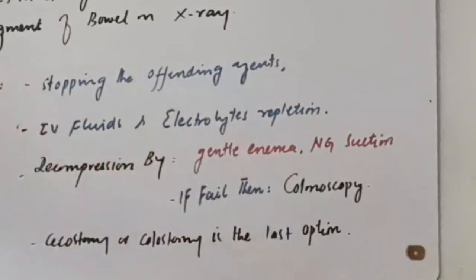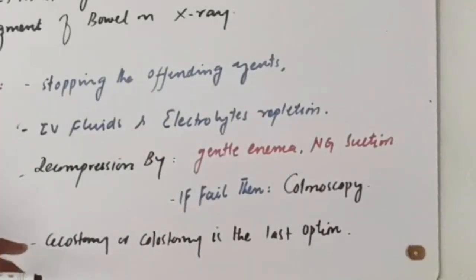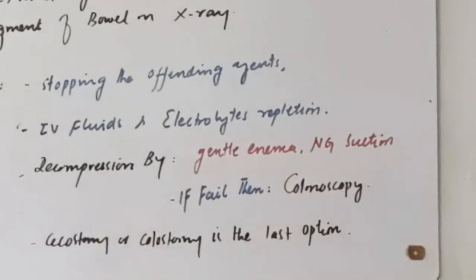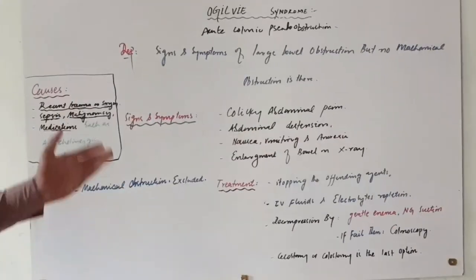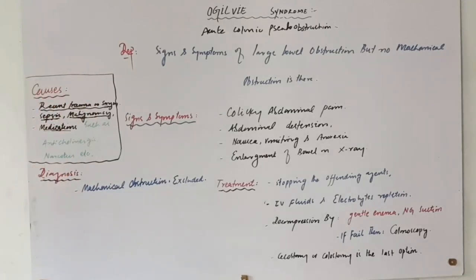If those options fail, perform a colonoscopy. The last option for decompression of the colon is a cecostomy or colostomy, in which a tube is inserted into the cecum or colon and through this tube the colon is decompressed.